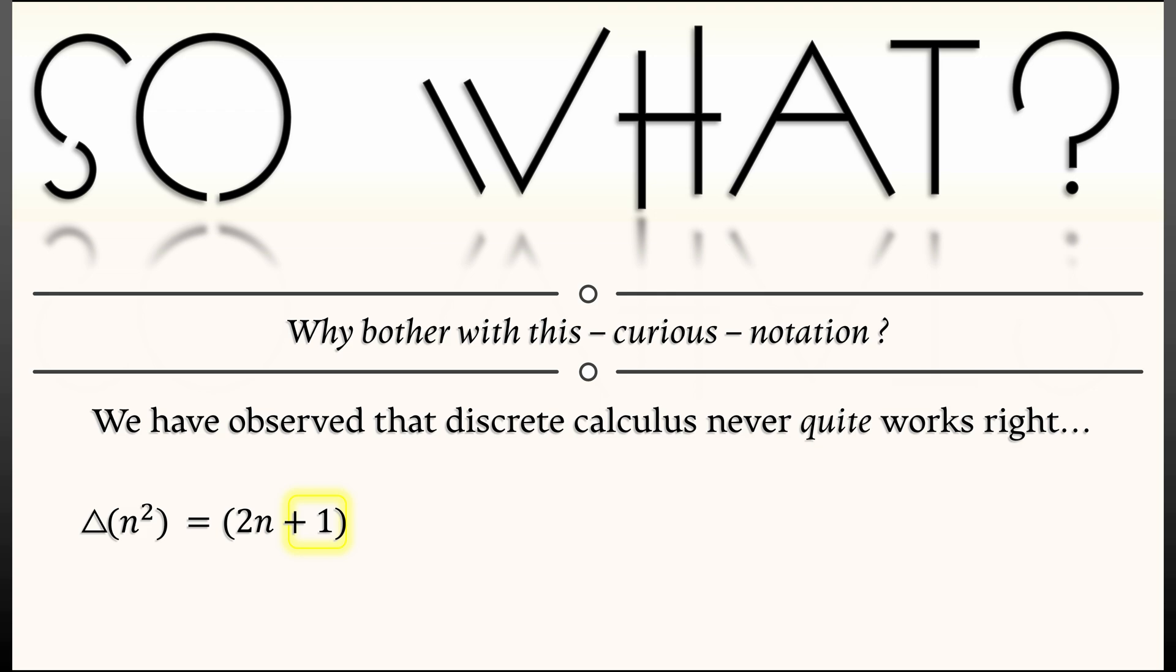Or if we turn to integrals, we've seen from the fundamental theorem that the integral from a to b of the derivative of x should be x evaluated from a to b. But the sum as n goes from a to b of delta xn is really x at b plus 1 minus x at a. That one evaluation point is just off by 1.